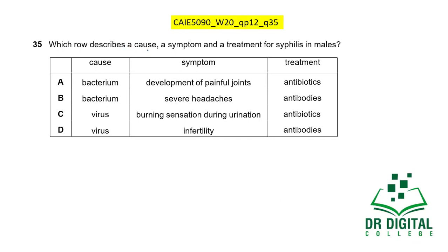In this question, which row describes a cause, symptom, and treatment for syphilis in males? Syphilis is caused by bacteria, not viruses — so options C and D are wrong. Options A and B both list a bacterial cause. The symptoms include development of painful joints and severe headache, which can occur in syphilis. The treatment for syphilis is antibiotics, not antibodies. We use antibiotics against Treponema pallidum, not antibodies. So the answer is A.